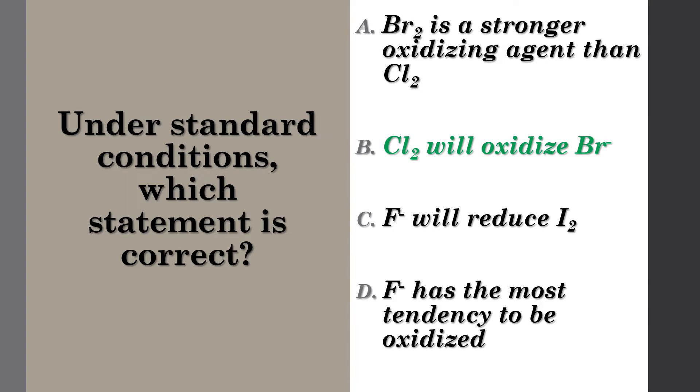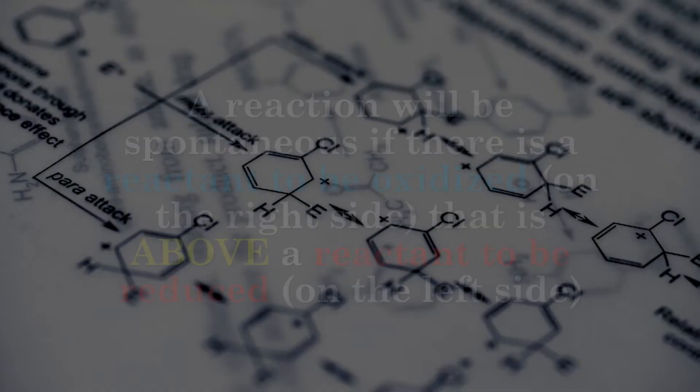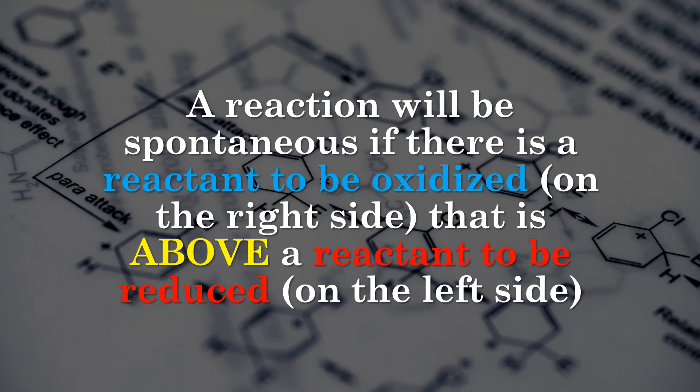Now just before we end, here's a great tip to consider when figuring out when a reaction will actually occur. A reaction will be spontaneous if there is a reactant to be oxidized on the right side that is above a reactant to be reduced on the left side. In simpler terms for the table in this video, as long as the reducing agent is above the oxidizing agent, then a reaction will occur.